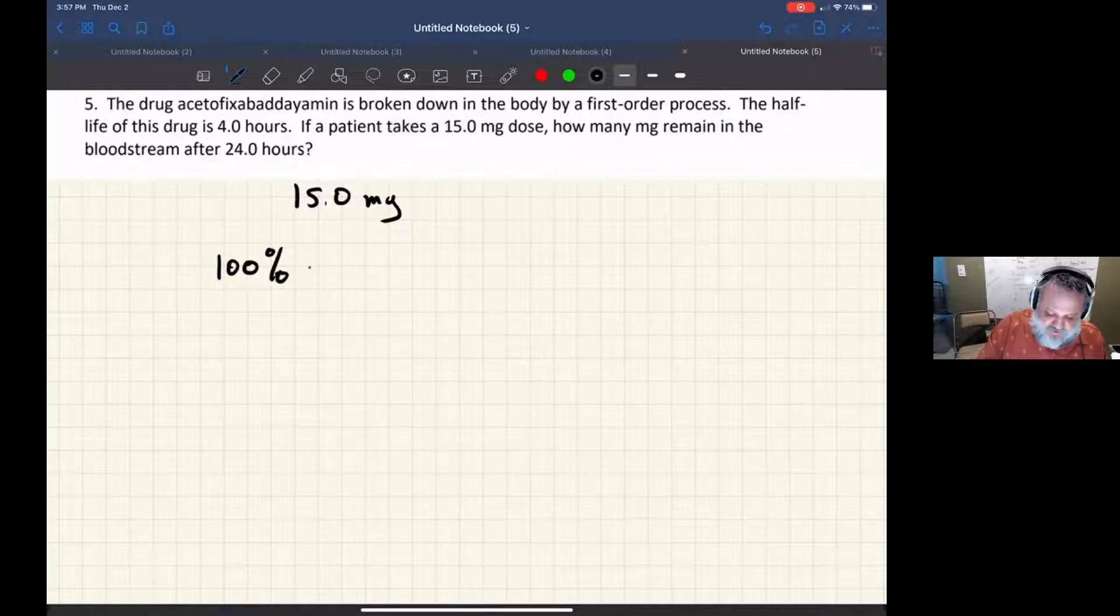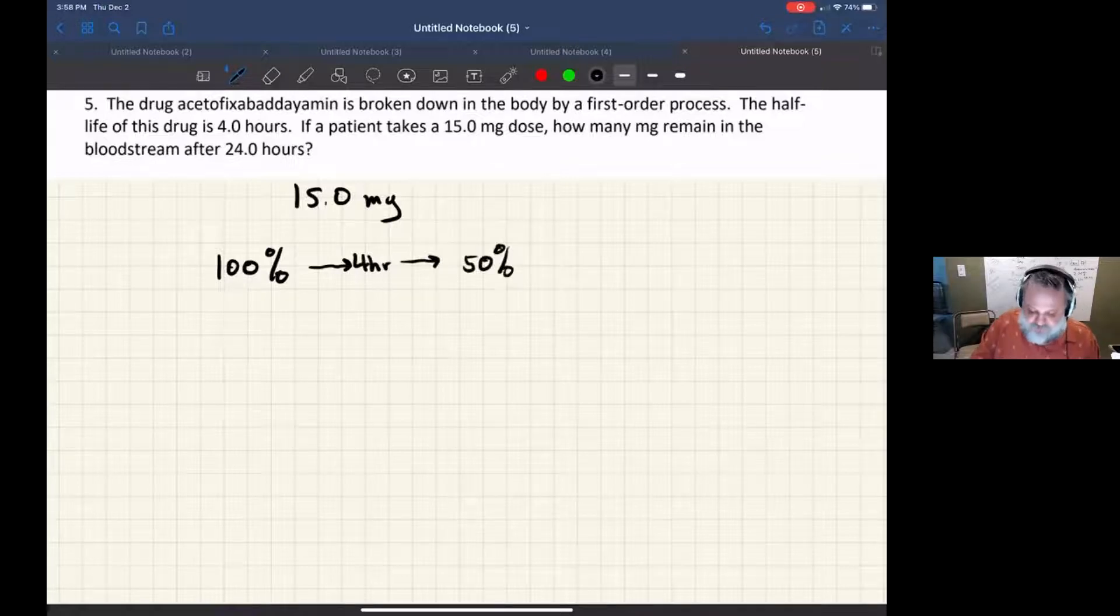It means that whatever I start with, 100% of that, after the first half-life, and the half-life here is four hours, then I'll have half of that amount remaining. After another four hours, I'll have half of that remaining, which is 25%.